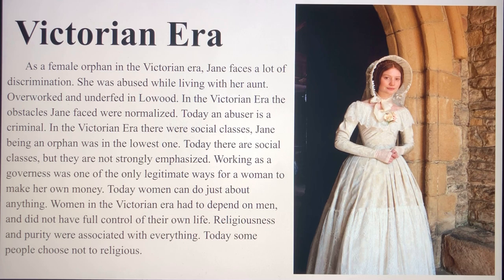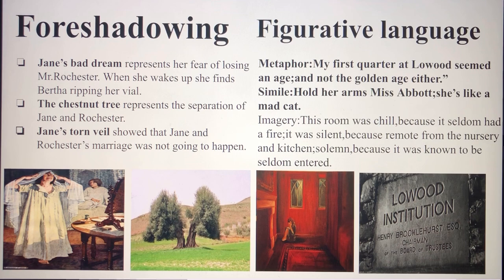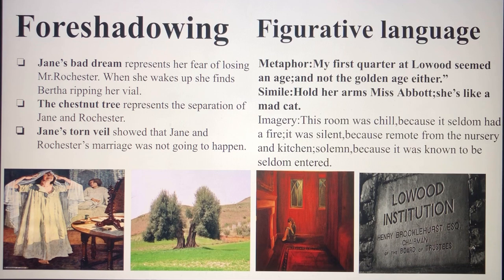Foreshadowing: Jane's bad dream represents her fear of losing Mr. Rochester. When she wakes up and finds Bertha ripping her veil, that foreshadows trouble. The chestnut tree that split in two the night before their wedding represents the separation of Jane and Rochester. Jane's torn veil showed that their marriage was not going to happen. Figurative language: metaphor — 'my first quarter at Lowood seemed an age, and not the golden age either.' Simile — she's compared to a mad cat, using 'like.' Imagery — 'the room was chill because it was seldom had a fire; it was silent because remote from the nursery and kitchen; solemn because it was known to be seldom entered.'